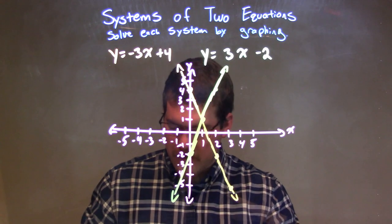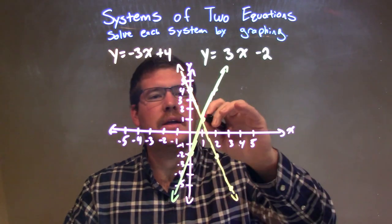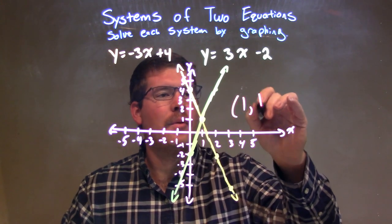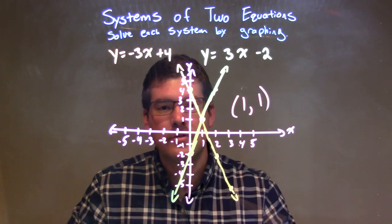We have a point of intersection now. Okay. Our point of intersection is right here. Right in the middle. And that point is 1, 1. And that is our solution to this problem.